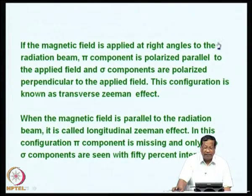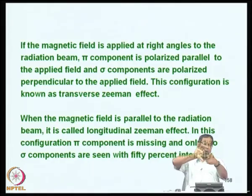If the magnetic field is applied at right angles to the radiation beam, the pi component is polarized perpendicular to the applied field—rotated by 90 degrees—and this configuration is known as the transverse Zeeman effect. When the magnetic field is parallel to the radiation beam, it is called the longitudinal Zeeman effect. In this configuration, the pi component is totally missing, and only two sigma components are seen, each having approximately 50 percent intensity since the pi component is missing—so sigma plus and sigma minus together account for 50 percent.